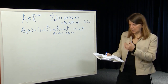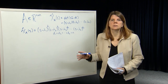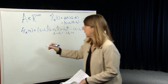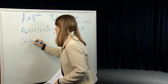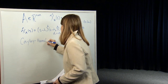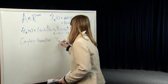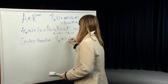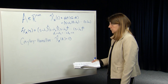The Cayley-Hamilton theorem tells us that every matrix satisfies its own characteristic equation. So by Cayley-Hamilton, we know that χ̂_A(A) equals the zero matrix.